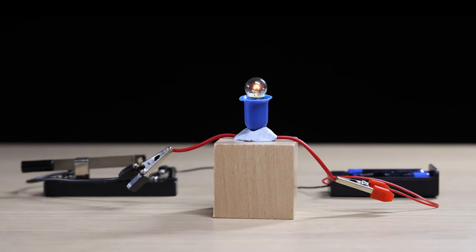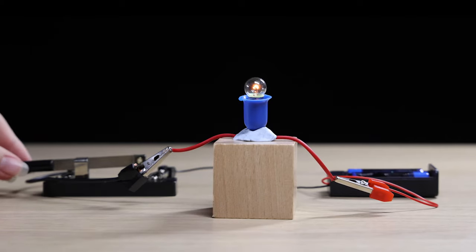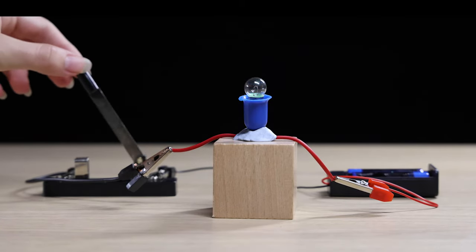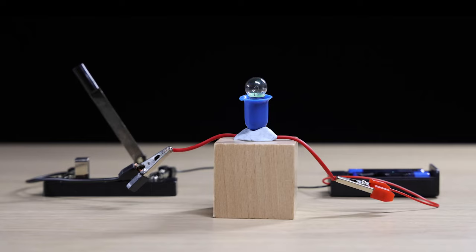When we close the switch, there is a path for the current to flow and the light turns on. When we open the switch again, there is no path for the current to flow and the light turns off.